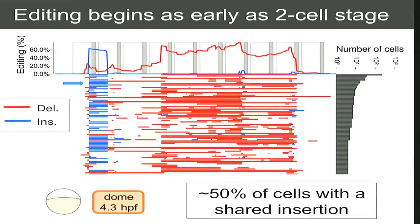This is what the partially processed data looks like. Every line here represents a unique allele and the histogram shows how many cells we're seeing that allele in. We primarily focus on insertions and deletions because of the bioinformatic challenges with these kinds of data. The blue bars are insertions, the reds are deletions, and there's quite a diversity. We also see that certain editing events are shared between cells — for example, almost exactly half of the cells in this particular embryo have an insertion at the first site, which is consistent with an editing event that happened at the two-cell stage.